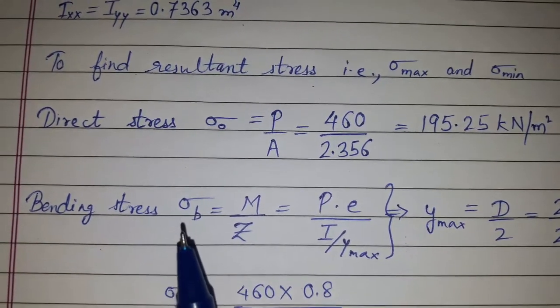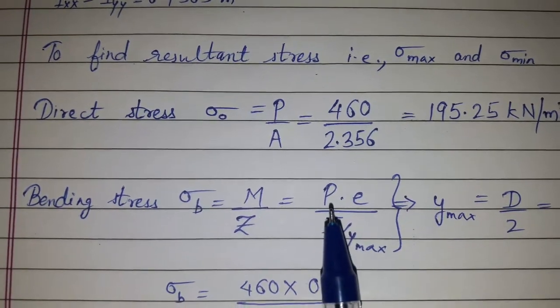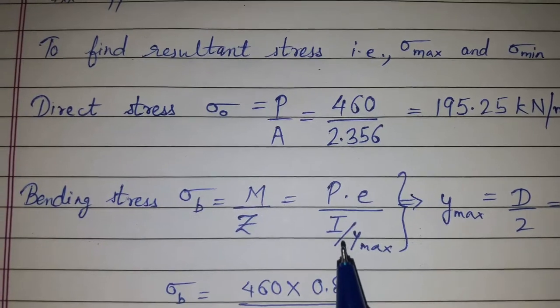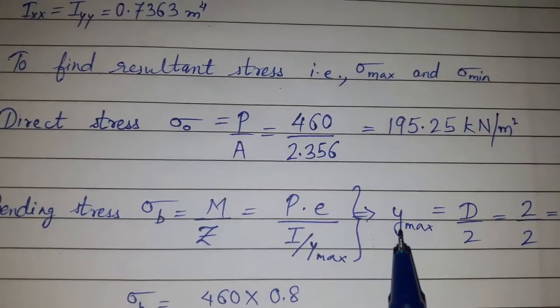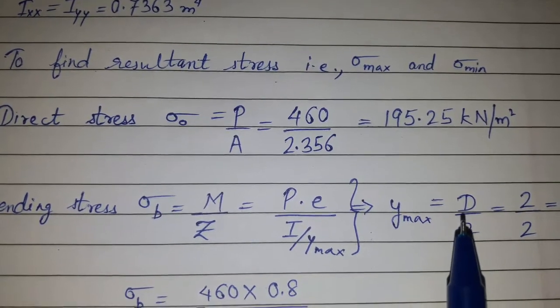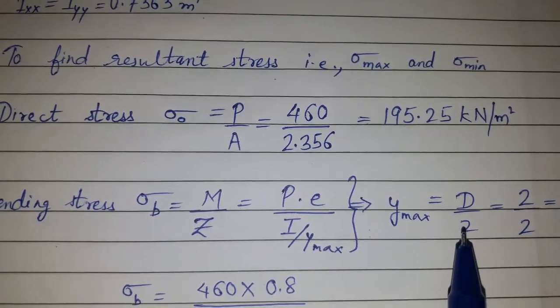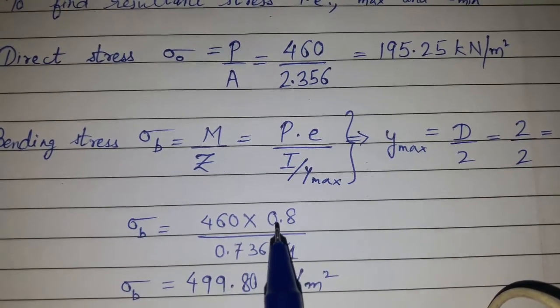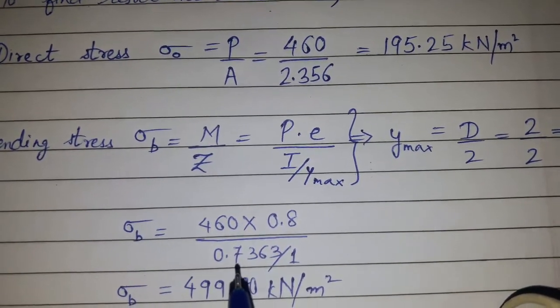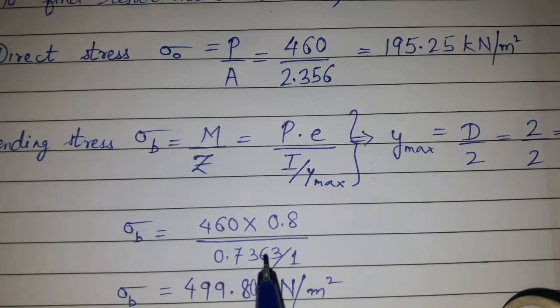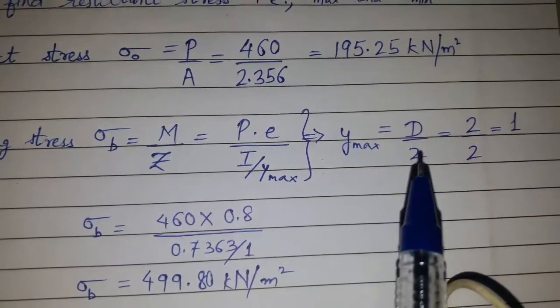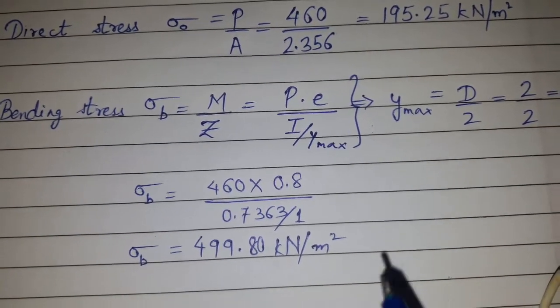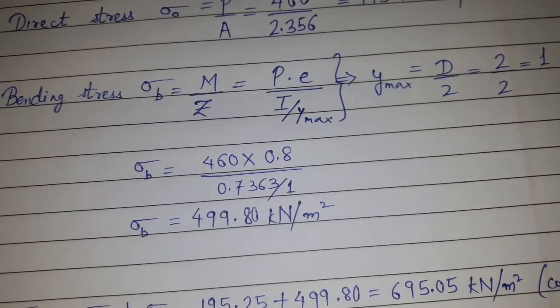Bending stress sigma b equals m upon z. We know that m equals P into E and z equals I upon y max, where y max for the circular section is capital D, the outer diameter, upon 2, which equals 2 upon 2, that is equal to 1. So we put the value of P, the load, E the eccentricity, and I which is given 0.7363 upon y max that we calculated as 1. So we got bending stress equal to 499.80 kN per m².